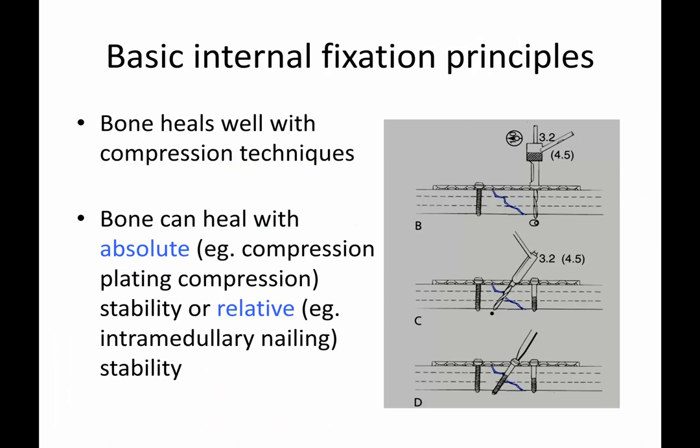Just a few basic principles you may hear thrown around: bone heals well with compression techniques when you operate on it. Bone can heal with either absolute or relative stability. Absolute stability is achieved with compression techniques, such as the lag screw compression technique shown here. Relative stability is when you put an intramedullary nail in a femur fracture — that is not a compression technique, but certain fractures can still heal very well that way.